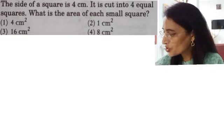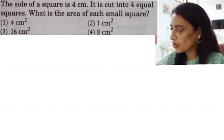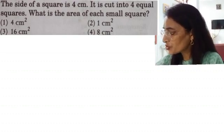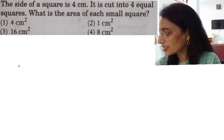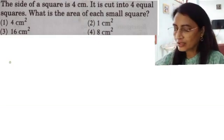Side of a square is 4 centimeter. It is cut into four equal squares. What is the area of each small square? And four options are given: 4 centimeter square, 1 centimeter square, 16 centimeter square, 8 centimeter square. Let me first draw.